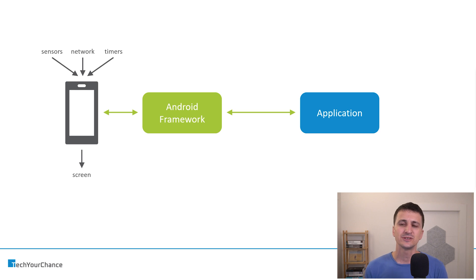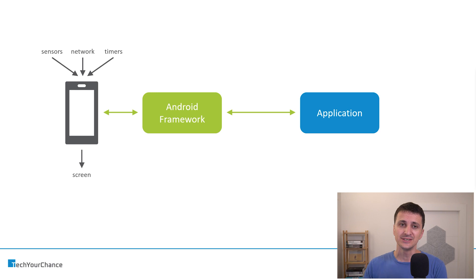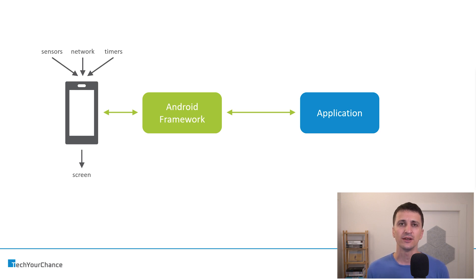Of course, it's not exactly just the framework. The framework is a wrapper for us of the Android operating system — the entire OS. So when I say Android framework, I really mean the framework and the operating system that sits behind this framework. To simplify the diagrams, I'm just drawing the framework. So the framework sits between our application and the Android device. Now, who has control over what's going on? Let me demonstrate something.